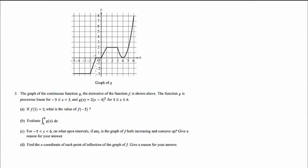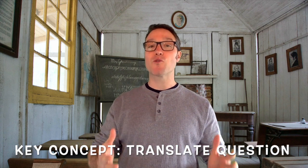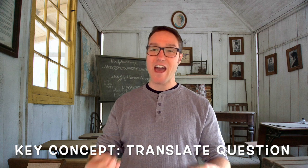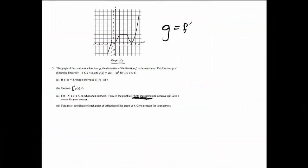Time for part C. For x between negative 5 and 6, on what open intervals, if any, is the graph of F both increasing and concave up? For that part, I have to remember what we wrote down at the beginning: G is F prime. Because again, they're asking about F. So F is increasing. Key concept number 3 is how to rephrase your knowledge in terms of what you're given. So if you're given G, you want to rephrase the question in terms of that function. So F is increasing. F is increasing. That means that F prime is positive. You have to make this connection.